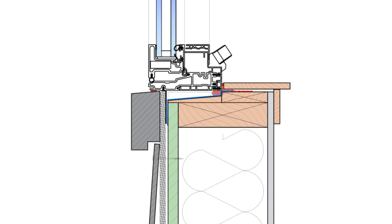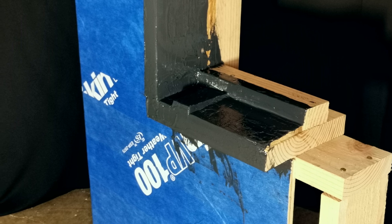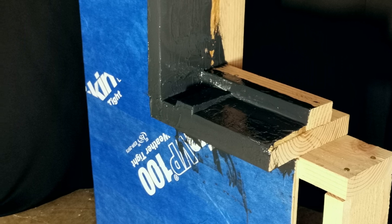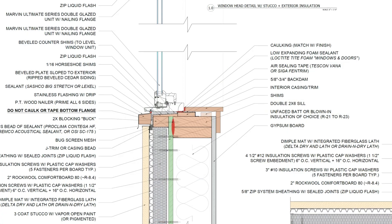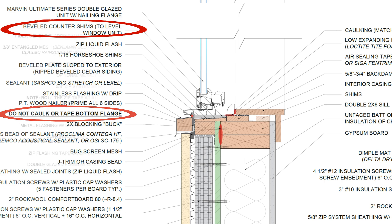Instead, slope the rough opening at the sill to the exterior to facilitate drainage at this location. Then coat the rough opening with a fluid-applied flashing or flashing tape that's integrated into the weather-resistive barrier for one monolithic water control layer. Install the windows on shims within the flashed rough opening, flashing and sealing the flanges only at the jamb and at the head, leaving the bottom flange completely unsealed so that water may drain out, and integrating it with the weather-resistive barrier on the exterior walls.